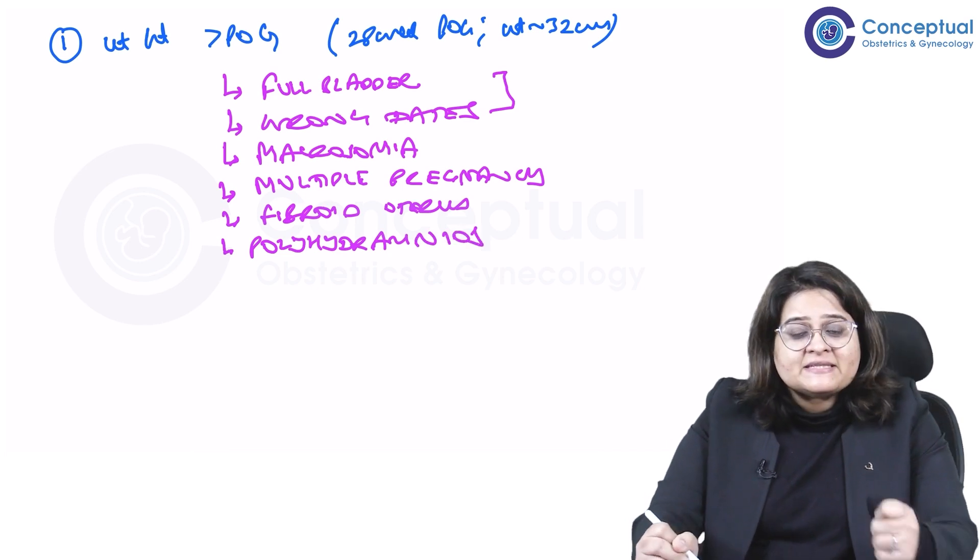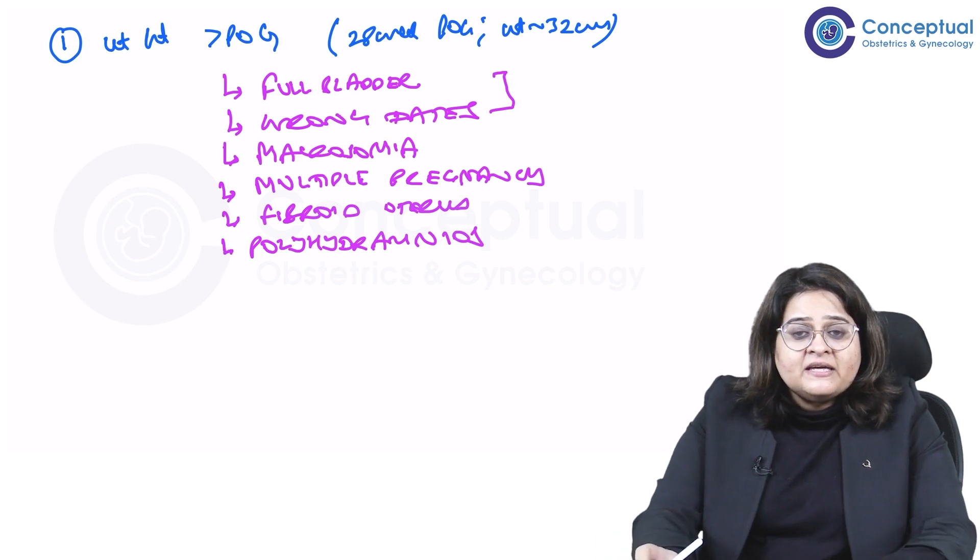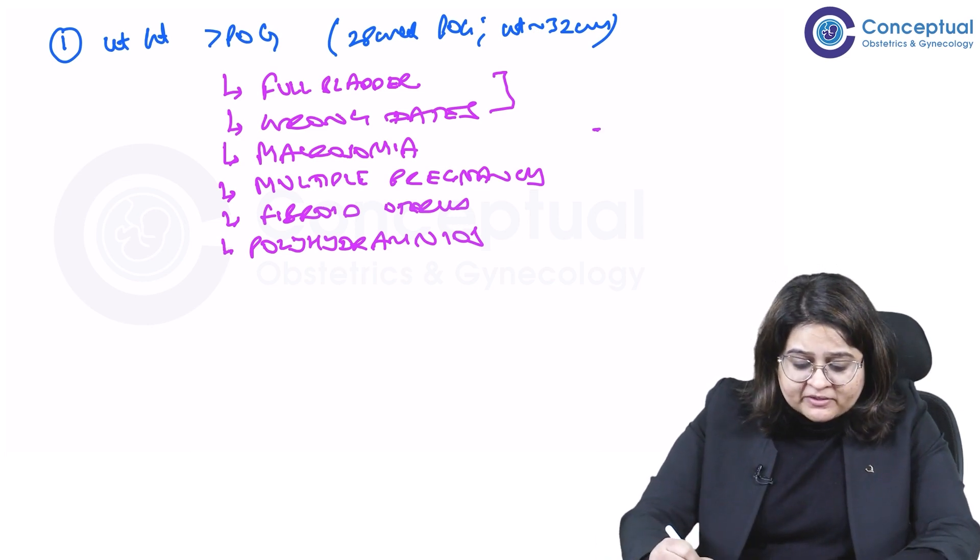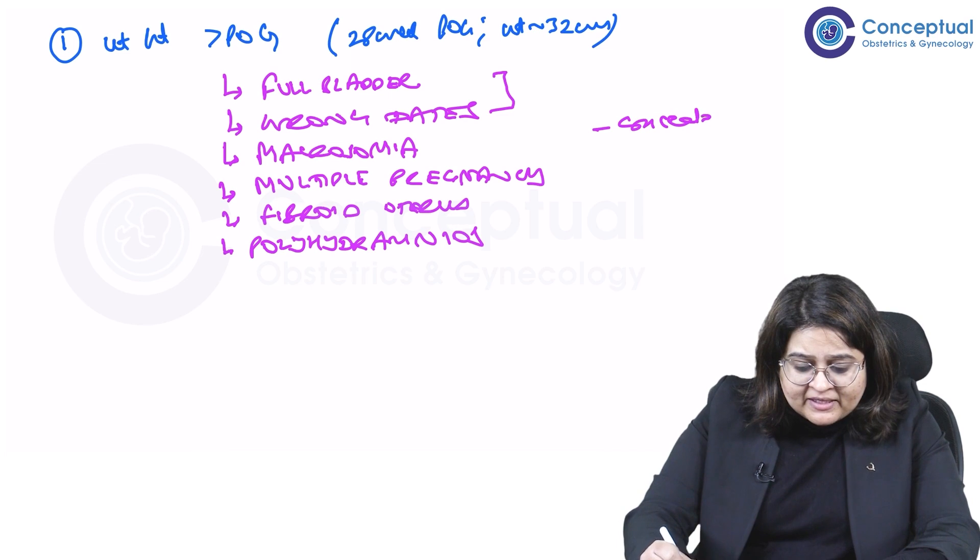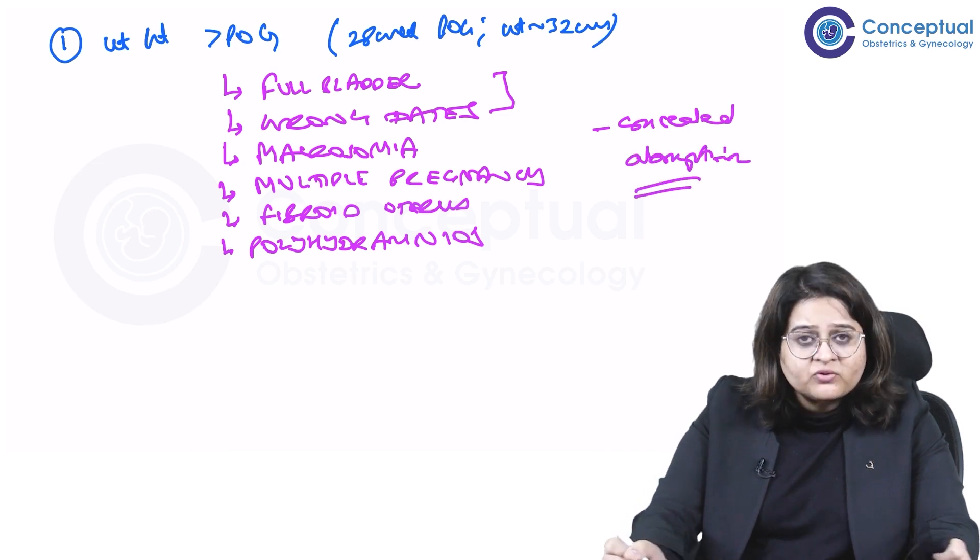And the last important one is polyhydramnios. That means the AFI is increased, the amniotic fluid index or the amniotic fluid is increased leading to polyhydramnios. Another thing you can think of is a concealed abruption.